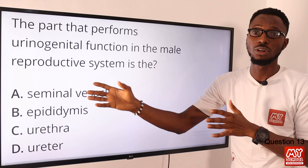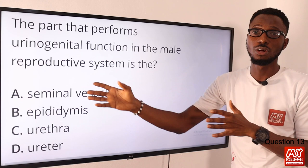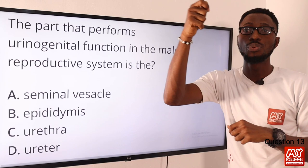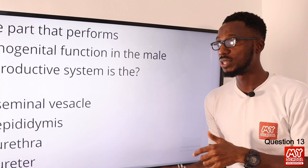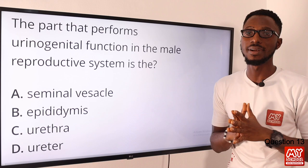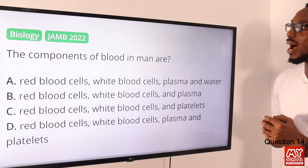Question thirteen: the part that performs a urino-genital function in the male reproductive system is what? Urino-genital means it serves both excretion and reproduction. The urethra is linked to the bladder where urine is stored and exits through the penis; during ejaculation it also transports sperm. The correct option is option C — the urethra.